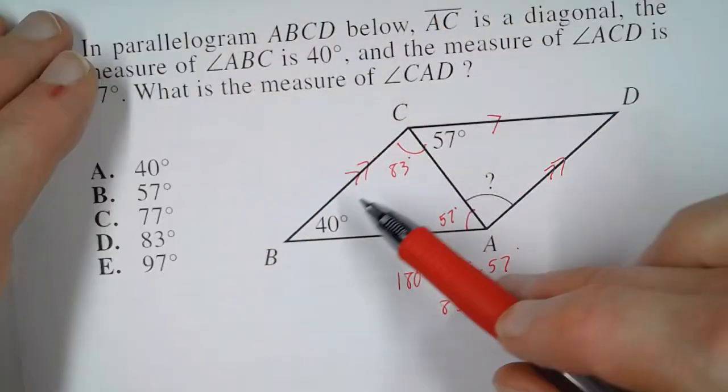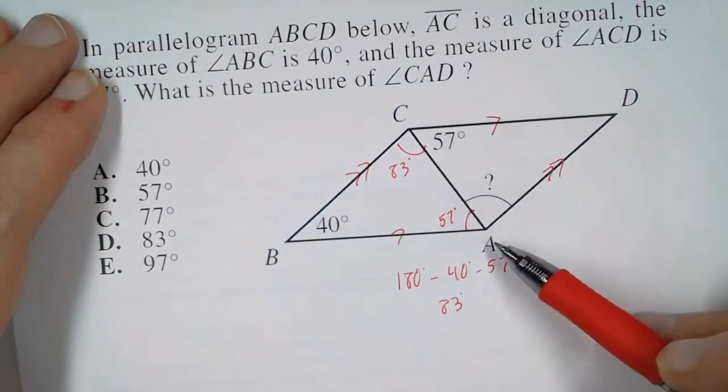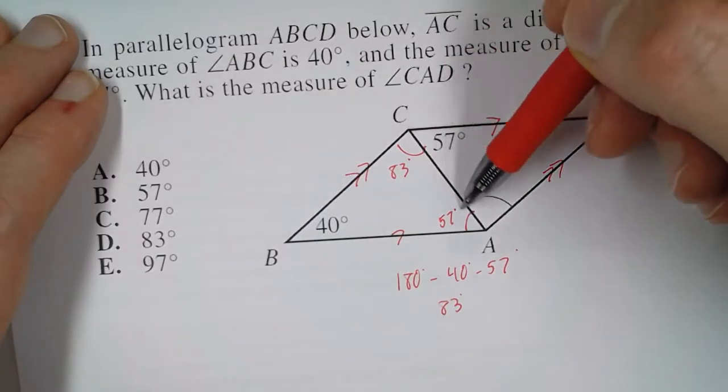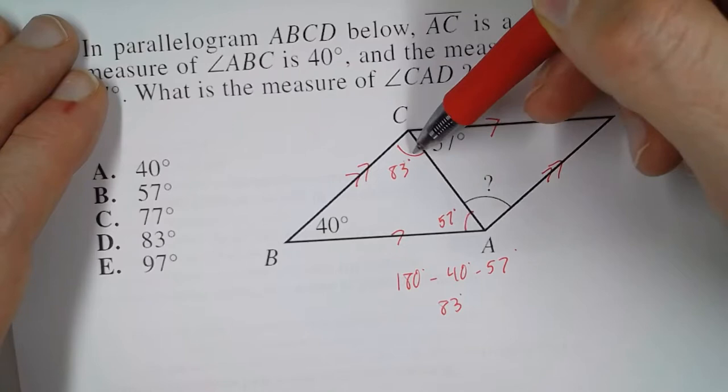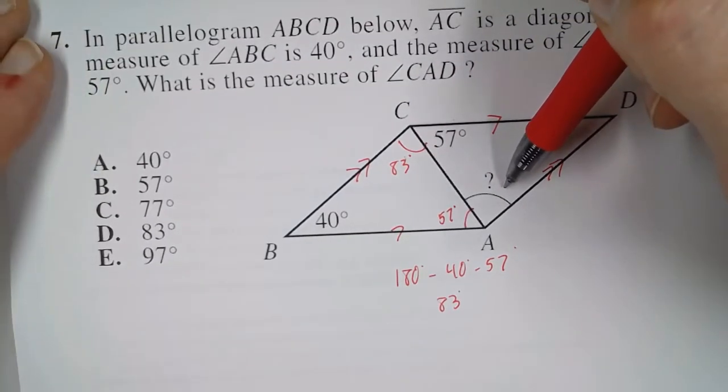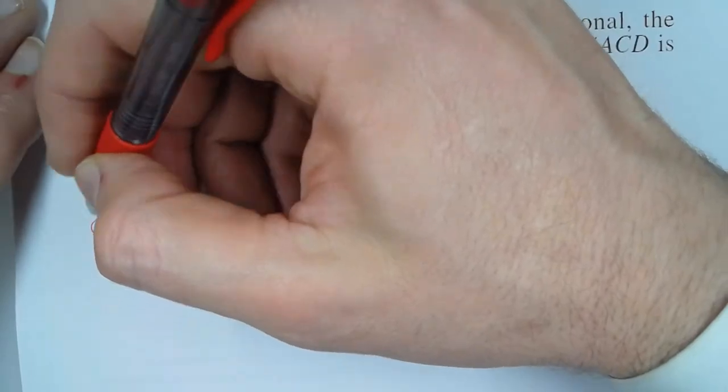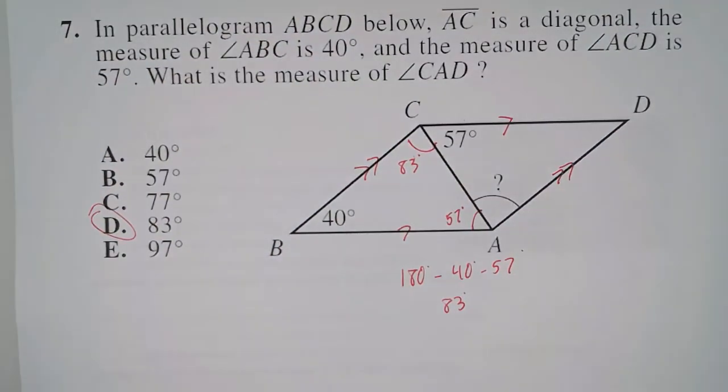Now notice that these two lines are also parallel, and this is a line between them. This angle and this angle are also alternate interior angles. So that means this angle and this angle are also the same. So that means letter D is our answer.